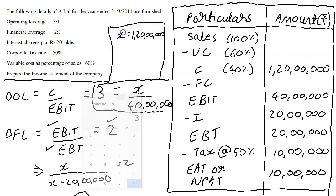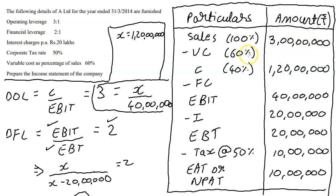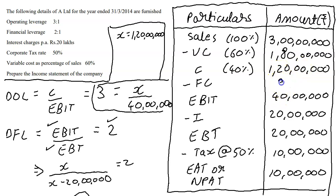Sales = 3 crores. Variable cost = 60% of 3 crores = 1 crore 80 lakhs (which also equals Sales − Contribution = 3 crores − 1.2 crores). Fixed cost = Contribution − EBIT = 1.2 crores − 40 lakhs = 80 lakhs. The income statement is now complete.